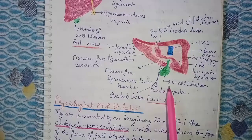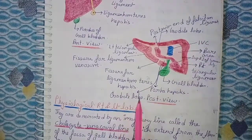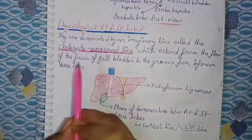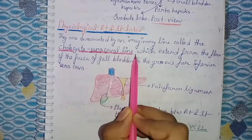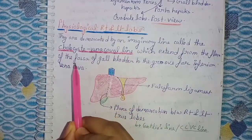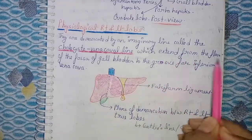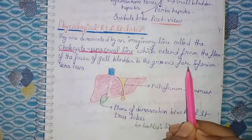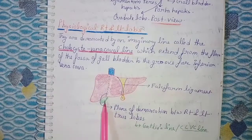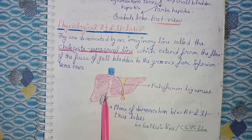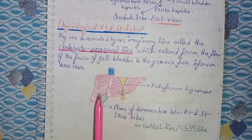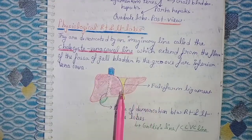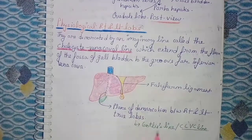Now the physiological right and left lobes are demarcated by an imaginary line called the cholecystocaval line. This line divides the physiological aspect of right and left lobe of the liver, extending from the floor of the fossa of the gallbladder to the groove for the inferior vena cava, as you can see in the figure. This demarcation helps divide the liver into right and left lobes on the physiological aspect.